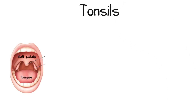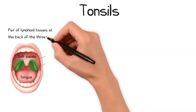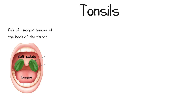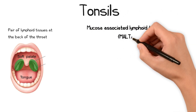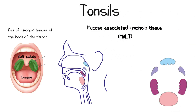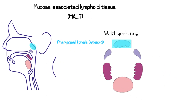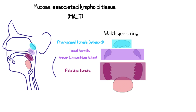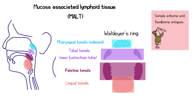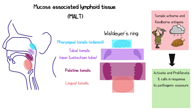The tonsils are a pair of lymphoid tissues situated at the back of the throat, forming part of a wider complex of mucosa-associated lymphoid tissues known as Waldeyer's ring. This consists of the pharyngeal tonsil known as the adenoid, the tubal tonsils situated close to the Eustachian tube, the palatine tonsil, and the lingual tonsil. Collectively, these lymphoid tissues sample airborne and foodborne antigens, activating and proliferating B cells in response to pathogenic exposures.